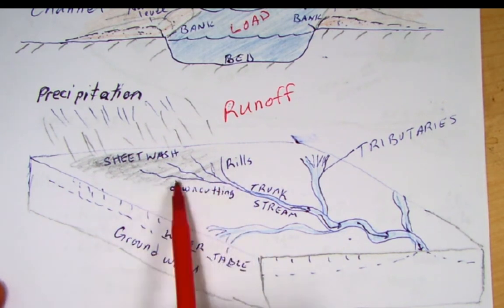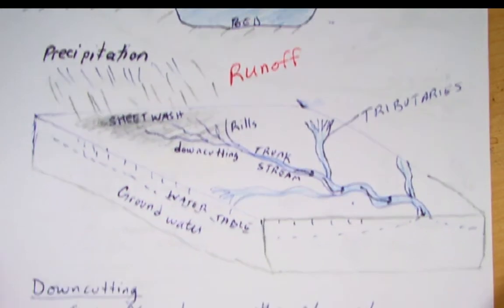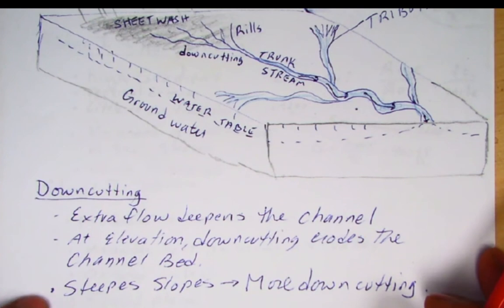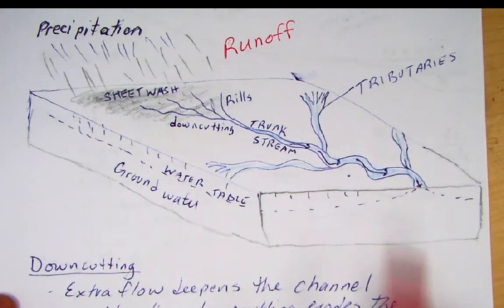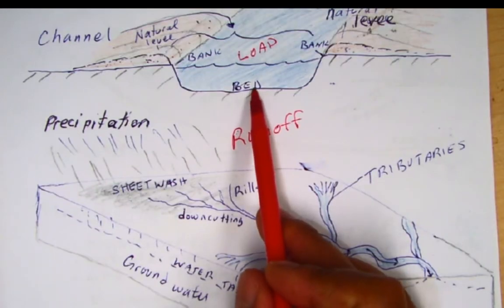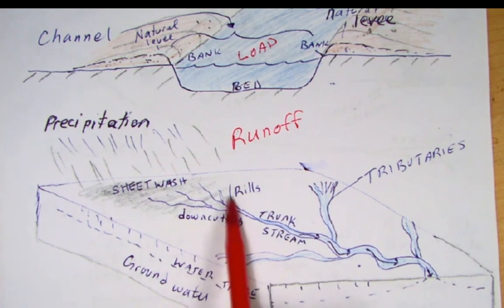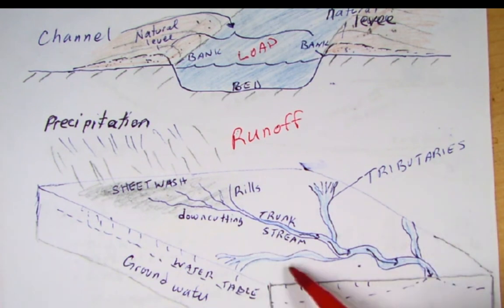These rills start to come together and begin down cutting. Down cutting erodes the channel bed — steeper slopes mean more down cutting, making the channel deeper. These rills come together and eventually you get a trunk stream, which is the main stream, and then you'll have tributaries that contribute water to this main stream.